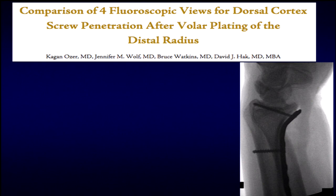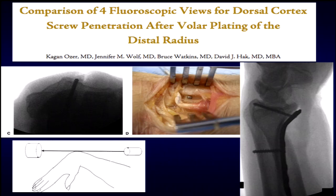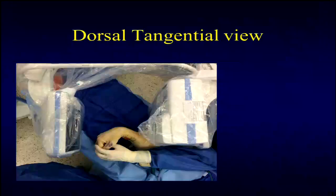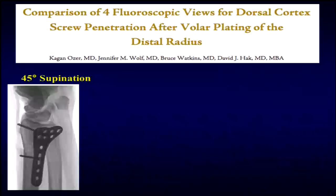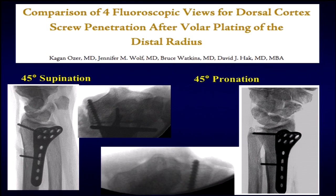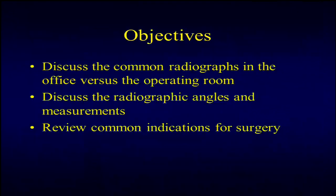One paper examined lateral films compared to the dorsal tangential view, which gives a nice view to confirm your screw is not in the third dorsal compartment. To obtain this shot, the X-ray machine must be above the table—it's easier with a larger C-arm but cumbersome with a mini C-arm. The 45-degree supination view shows whether radial styloid screws are prominent, and the 45-degree pronation view confirms ulnar-sided screws are not prominent. In summary, we covered the X-rays obtained in clinic and the operating room, indications for surgery, and different treatment approaches. Thank you.